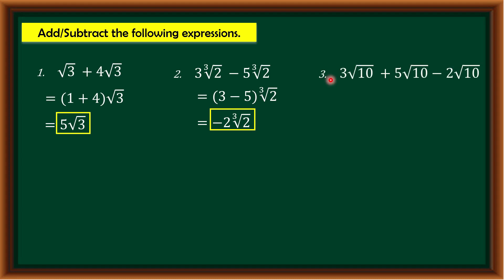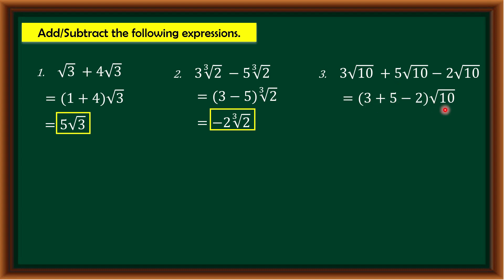Number three: 3√10 + 5√10 - 2√10. We have three expressions all containing similar radicals. We get their coefficients 3, 5, and -2, add or subtract them, and copy the radical. So 3 + 5 - 2 = 6. Therefore, our final answer is 6√10.